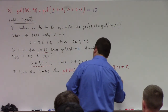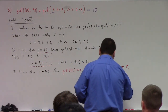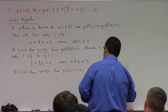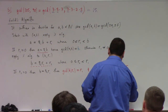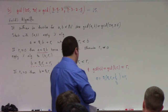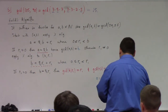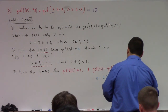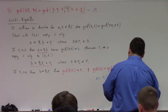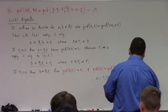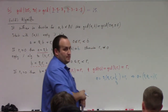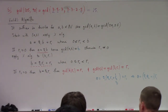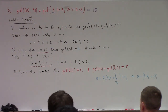One way you could see it: A equals Q₁·B, and B equals Q₂·R₁ plus R₂, which we're saying is 0. So substituting, A equals Q₁·(Q₂·R₁) plus R₁, which gives A equals (Q₁·Q₂ + 1) times R₁. Thus R₁ is a divisor of A.